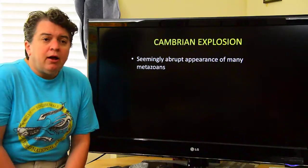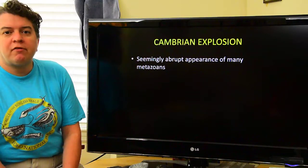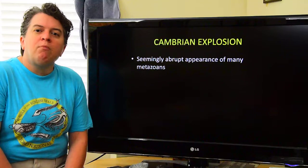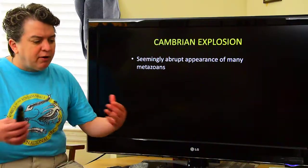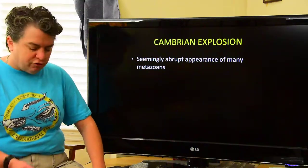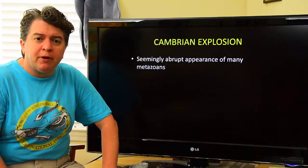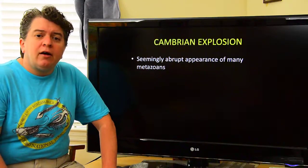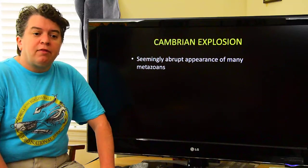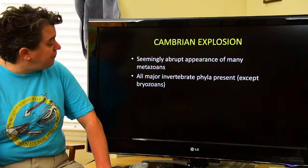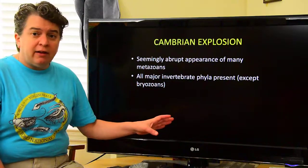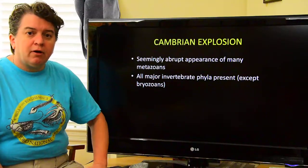In the Cambrian, one very noticeable thing is we get a lot of metazoans — remember those larger multicellular organisms. This appearance of all these larger multicellular organisms is called the Cambrian explosion. It's a seemingly abrupt appearance because for a long time we did not know about some of the older metazoans that inhabited the Neo-Proterozoic, like those Ediacaran fauna organisms. Basically, in the Cambrian explosion, we see all major invertebrate phyla except the bryozoans, which come along a little bit later.